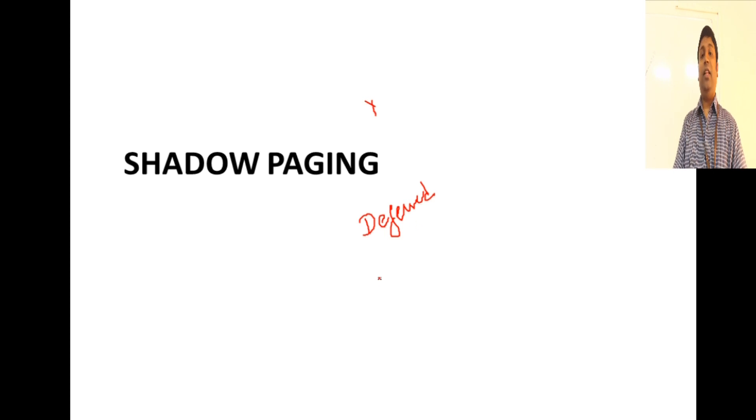What do you mean by a recovery technique while you are carrying out a transaction? Sometimes a failure can happen, and when a failure happens, how are you going to take the database to the previous consistent state? For recovery, we learned some types of techniques: deferred update and immediate update.